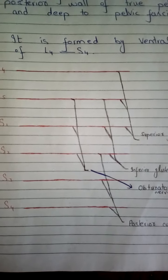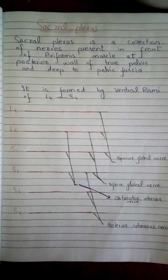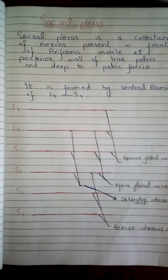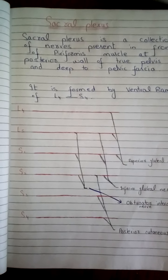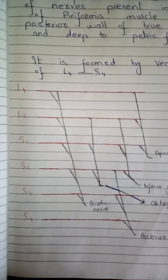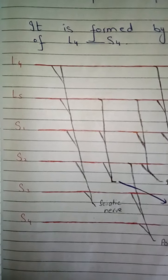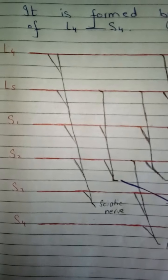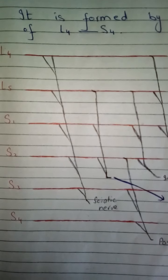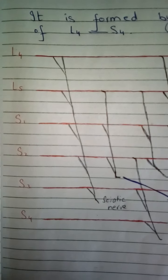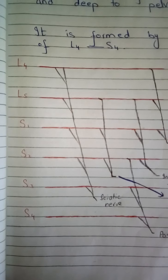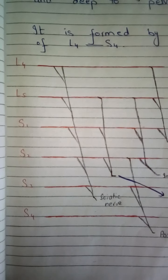The blue arrow shows the name of the nerve. The last and most important nerve of the sacral plexus is the sciatic nerve. Nerve fibers from L4, L5, S1, S2, and S3 combine to give this large nerve. The ventral rami of L4 to S3 give the sciatic nerve.